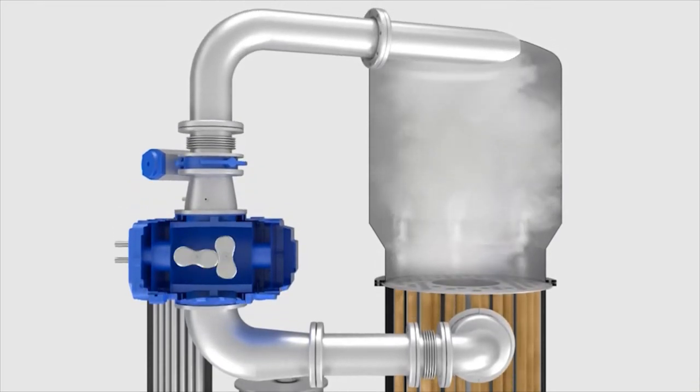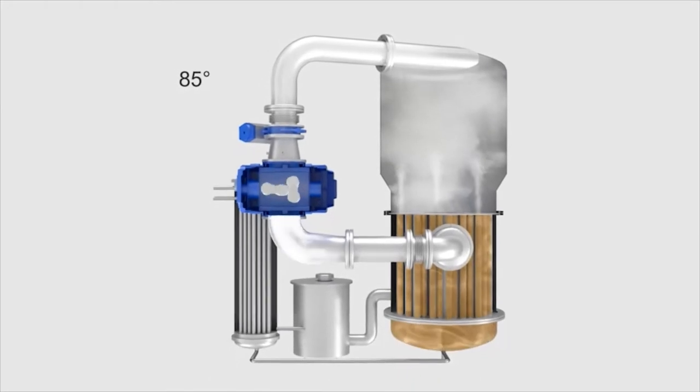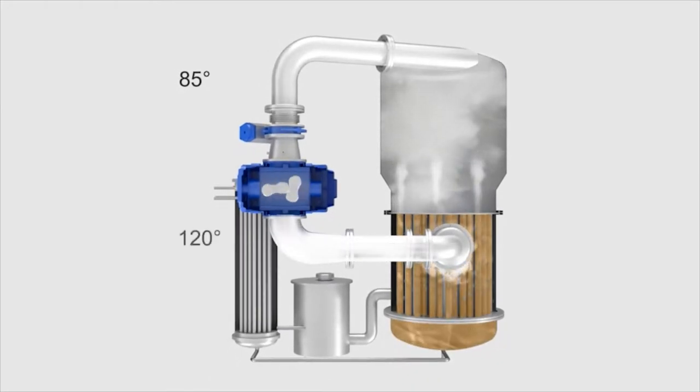The vapor compressor compresses the 85 degree hot steam, creating compression heat. Steam leaves the vapor compressor at a temperature of 120 degrees. In the bundle of pipes, hot steam meets the cooler pipes of incoming wastewater.